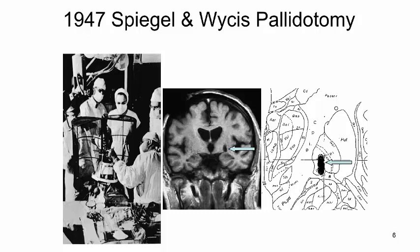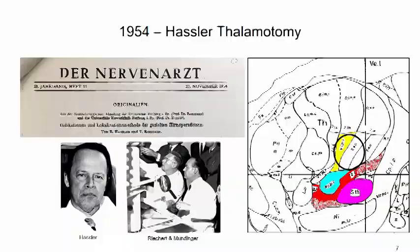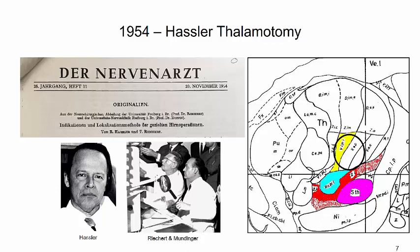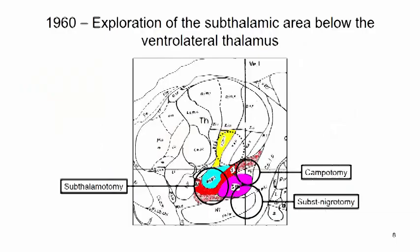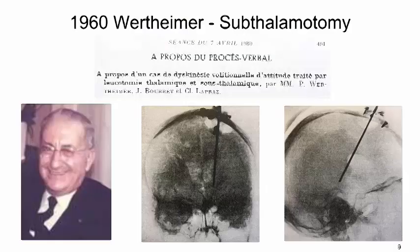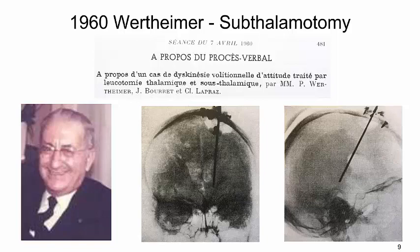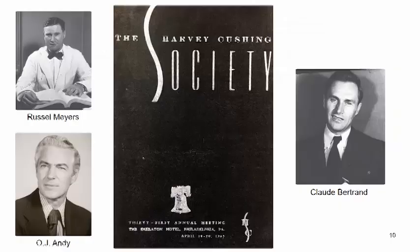Starting with the historical background: the pallidotomy was the first target used for movement disorders. In 1954, Husker introduced the thalamotomy, which due to its better effect on tremor soon became the target of choice. The introduction of the thalamotomy in the ventral lateral thalamus naturally led to exploration of the underlying subthalamic area, with the most important development being the subthalamotomy, first introduced by Wertheimer in 1960.